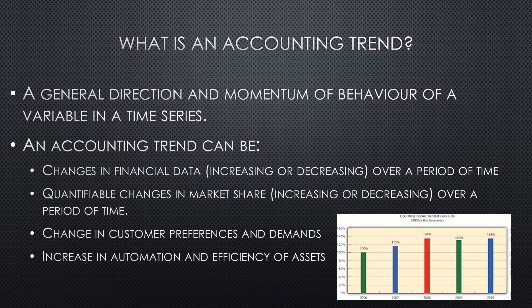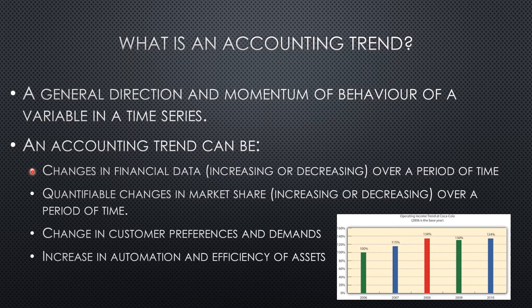An accounting trend is basically represented by a general direction and momentum of behavior of a variable in a time series. In layman's terms, it means whether an account — from a statement of profit or loss, such as sales, wages, advertising, or cost of goods sold — has increased or decreased over time. An accounting trend can be one of four things: a change in financial data, a change in market share, a change in customer preferences and demands, or an increase in automation and use of assets. For this exam, we are primarily looking at changes in financial data — the most important accounts in the statement of profit or loss and the statement of financial position.